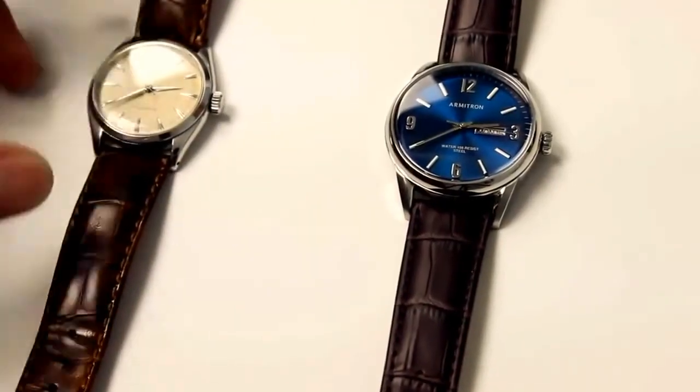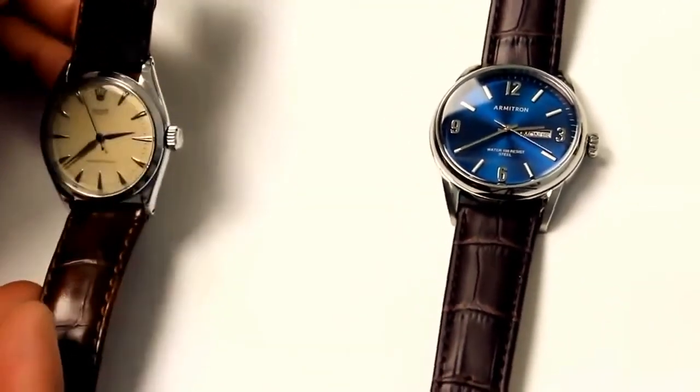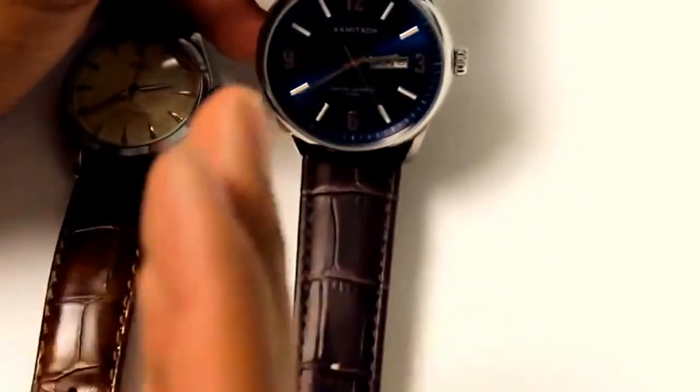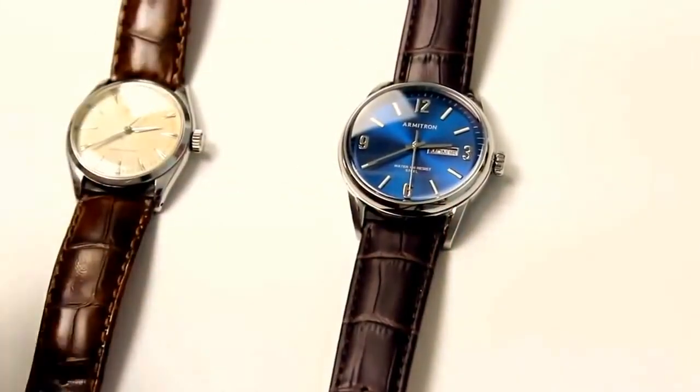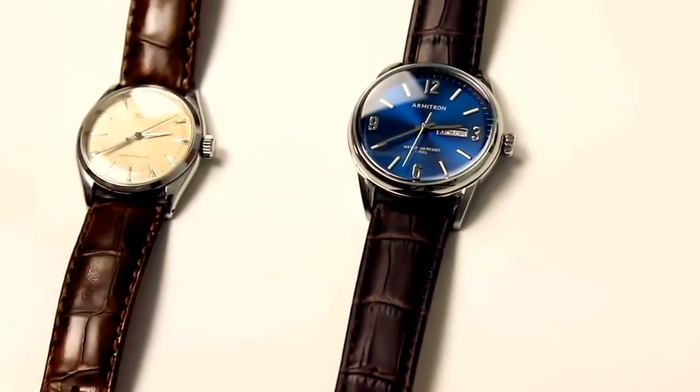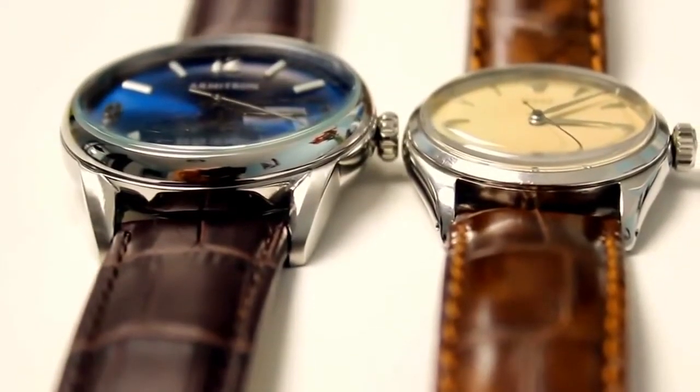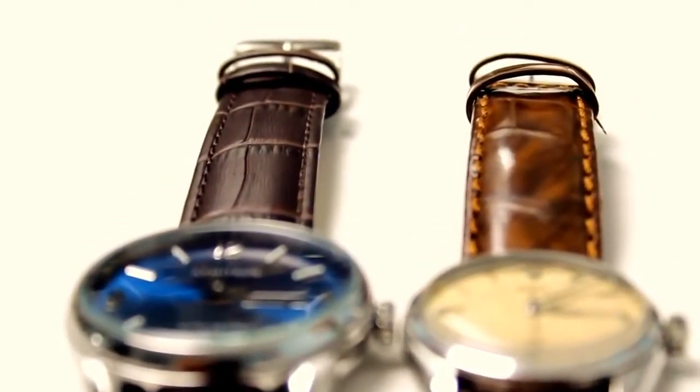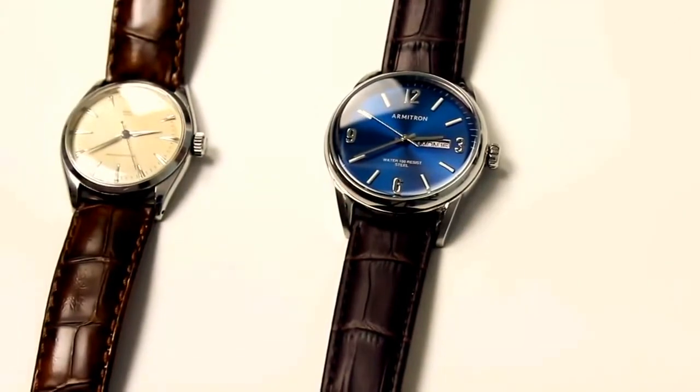Alright guys so here are the two watches that we're going to be comparing. On the left we have the vintage Rolex Oyster and then on the right we have my Armitron Day Date Silverton model. I tried to keep it as close as possible and I was trying to use things from my own collection - I didn't want to buy anything. These are two similar watches - they're both very classic. Obviously the two most obvious things is one has a day date and one does not, and one is a bigger case than another. But in essence it's almost the same style of a classic wrist watch.